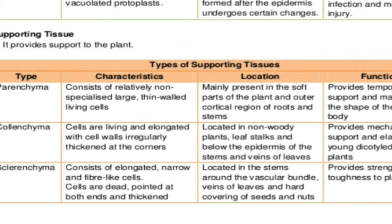Then there is sclerenchyma, which is all dead tissue. It has elongated, narrow, fibrillic cells that are dead and pointed at the ends. There are two types: sclerids and fibers. Sclerids are not very elongated but fibers are very elongated. They are located in the stem, around vascular bundles, in xylem and phloem. Wherever a hard part is required — in leaf veins — sclerenchyma provides rigidity, strength, and toughness to the plant.